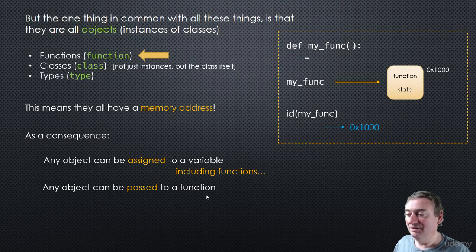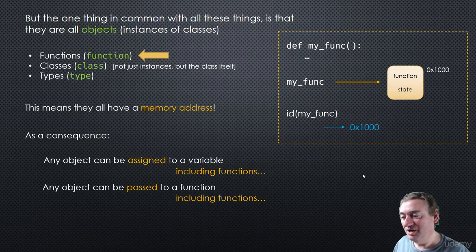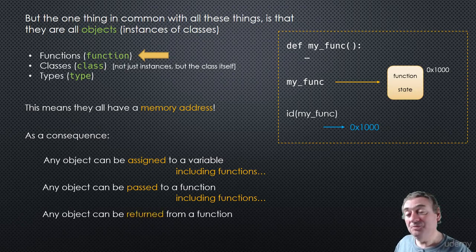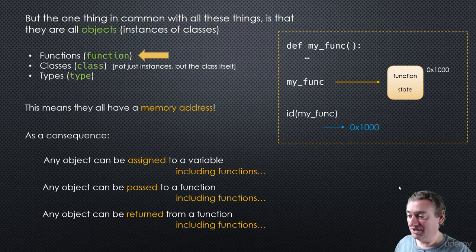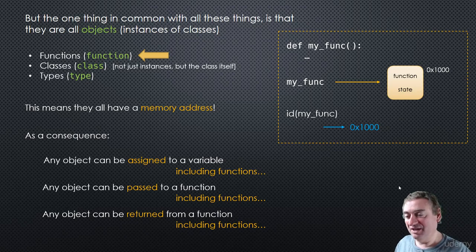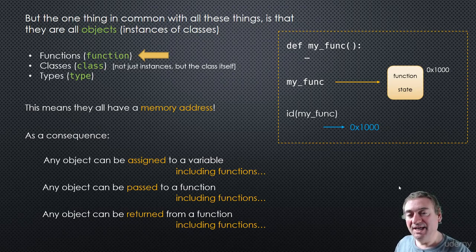Any object can be passed to a function as an argument, which means functions can also be passed to functions - something we'll make a lot of use of when looking at decorators. Any object can also be returned from a function, including functions. So functions are first-class citizens just like any other variable like integer or float - you can reference them, assign them to a variable, pass them into functions, or get them as a return value. This makes Python very powerful.